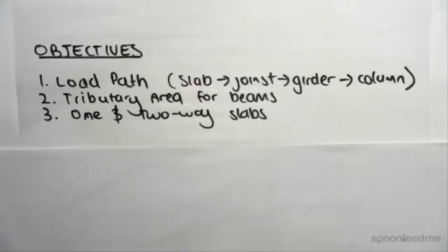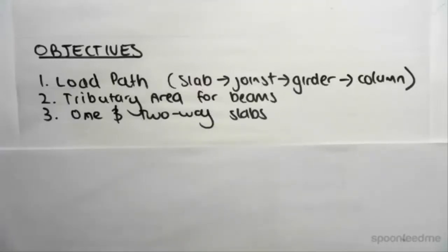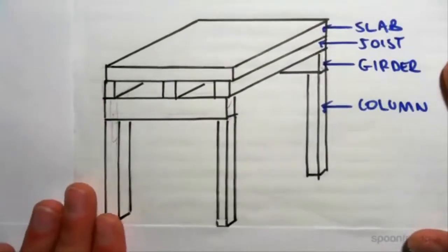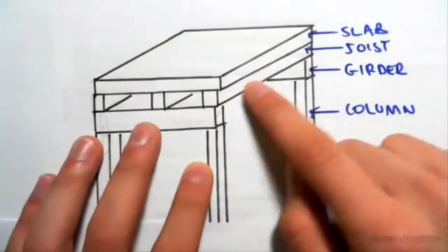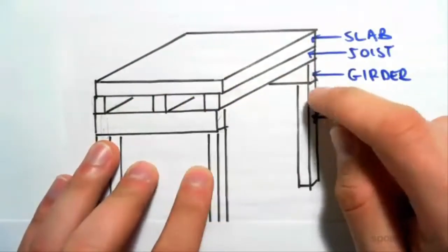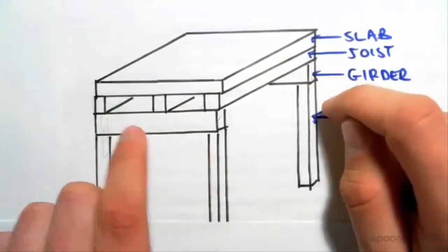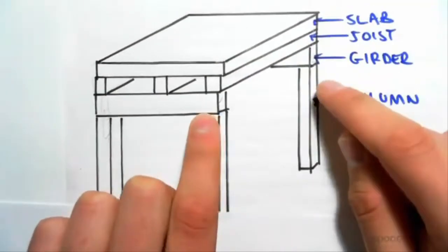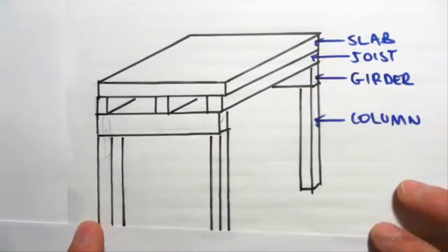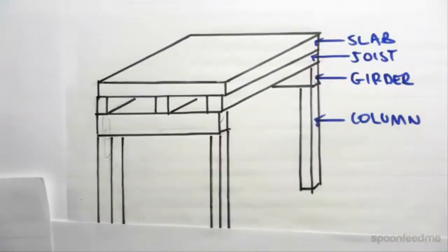The objective of this video is to look at load paths going from slab to joists to girders to columns. We're then going to look at tributary area for beams, and then define one-way and two-way slabs and the major difference between the two. A typical structure normally has a slab, which is supported by joists, which are then supported by girders, which are supported by columns — so it goes: slab, joist, girder, column.